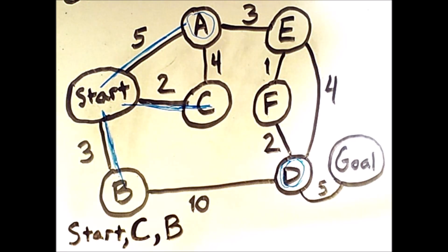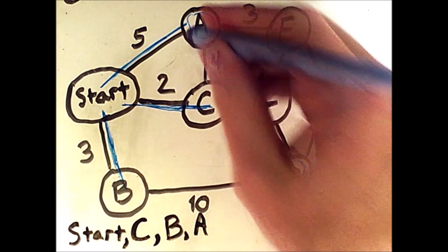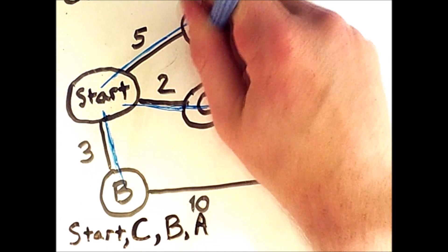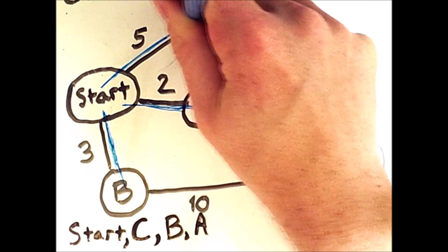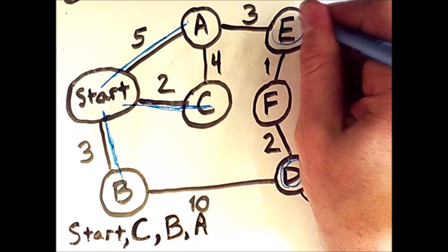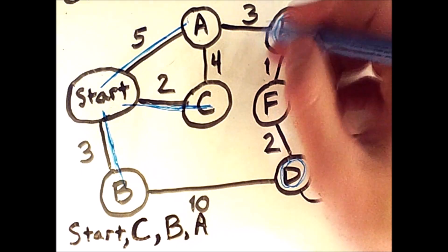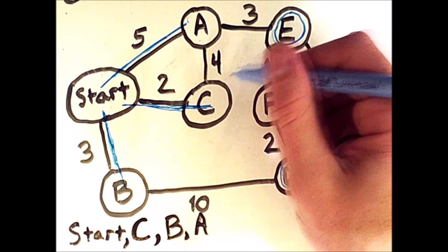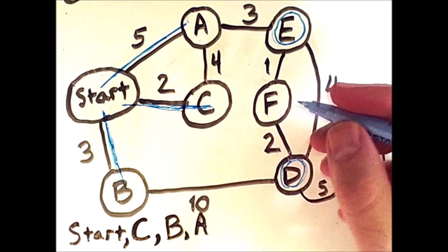That allows us to add A to our list of search states. It is no longer on the fringe, and because A has a neighbor we haven't seen yet, namely E, E is now on the fringe. We don't put C on the fringe, even though it's a neighbor of A, because we've already visited C.